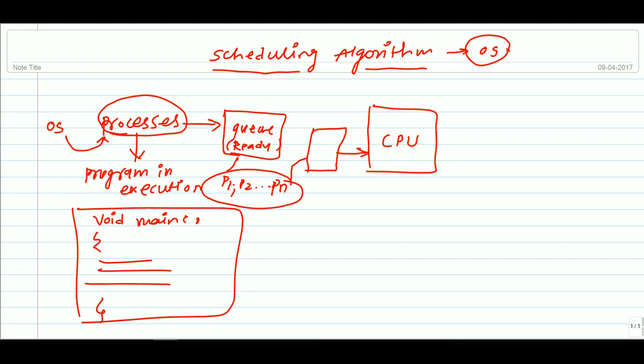to the CPU. Now this scheduling or this selection criteria is normally decided by the scheduling algorithms. Suppose, for example, there are three processes P1, P2, and P3, and they are stored in